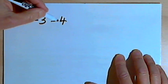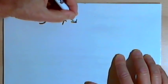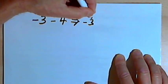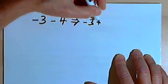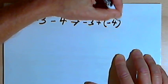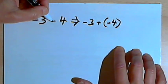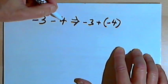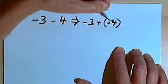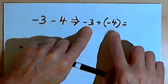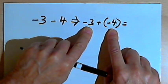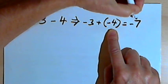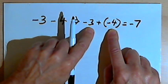Here I've got negative 3 minus 4. I'm going to take that subtraction problem and turn it into addition: negative 3 plus negative 4. I took the opposite of my subtraction and made it addition, and I took the opposite of the 4 and made it negative 4. Now I'm adding negative 3 and negative 4. The signs are the same, so the answer will be negative — I add 3 and 4 together to get negative 7.